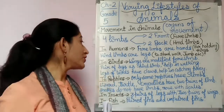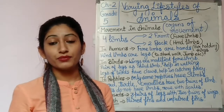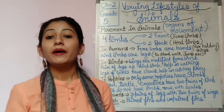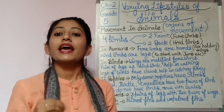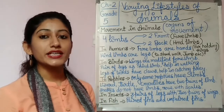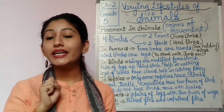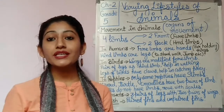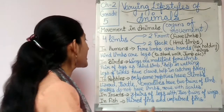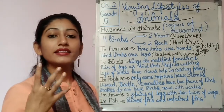When we talk about birds, the wings that you see on birds are actually the modified forelimbs of birds. Modified forelimbs means that while our forelimbs help us hold things, in birds the forelimbs have been modified into wings that help them fly.